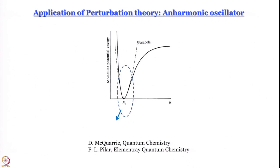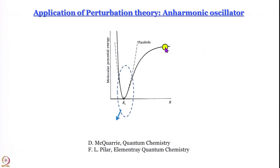We also understand that the simple harmonic oscillator with a parabolic potential cannot really be the complete picture. If you think of the interaction of two atoms in a diatomic molecule and plot their potential energy: when the two atoms are very far away the interaction energy is 0; as they come closer, the nucleus of one experiences the electrons of the other, they attract each other, and there is a decrease in energy — stabilization — until an optimum point, beyond which the two nuclei discover each other and there is very strong internuclear repulsion, causing the energy to rise sharply.